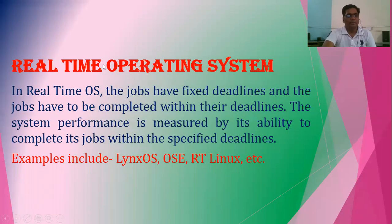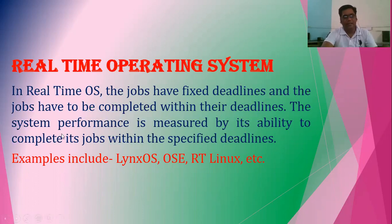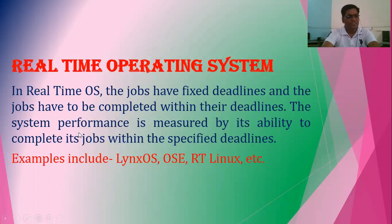The next is real-time operating system. In a real-time operating system, jobs have fixed deadlines and must be completed within those deadlines. For example, if you are appearing in an online exam, a deadline is given and you have to finish within the time frame. The system performance is measured by its ability to complete jobs within the specified deadlines. Examples include Linux OS, OSE, and RT-Linux.